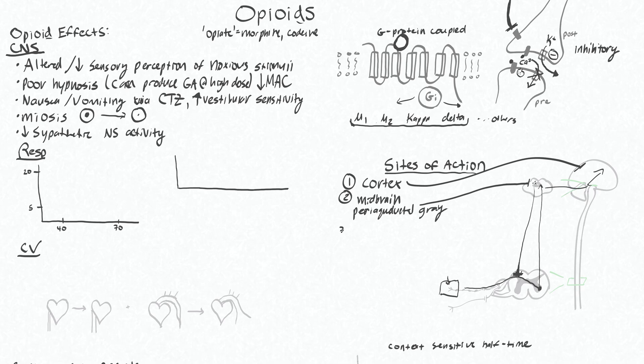Next we have the brainstem, and this is very important when it comes to the respiratory effects of opioids and a little bit for the cardiovascular effects. Your respiratory drive centers are in your brainstem, so when we have respiratory depression from opioids, this is where that's acting.